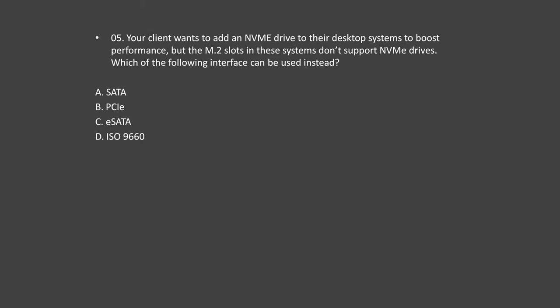Question number 5. Your client wants to add an NVMe drive to their desktop systems to boost performance, but the M.2 slots in these systems don't support NVMe drives. Which of the following interfaces can be used instead? Option A: SATA. Option B: PCIe. Option C: eSATA. Option D: ISO 9660.